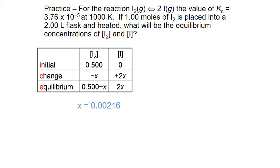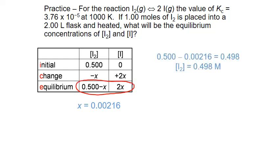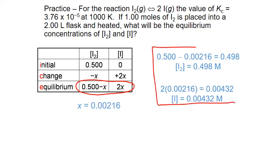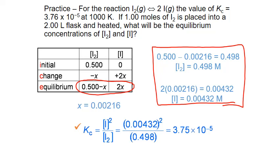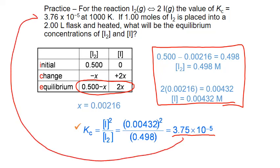Substituting X equals 0.00216 into the equilibrium concentration formulas: molecular iodine at equilibrium is 0.498 moles per liter, and atomic iodine is 0.00432 moles per liter. As a final check, plugging these back into the equilibrium expression gives 3.75 times 10 to the negative 5 — almost exactly the given K value — confirming our answers are reasonable.